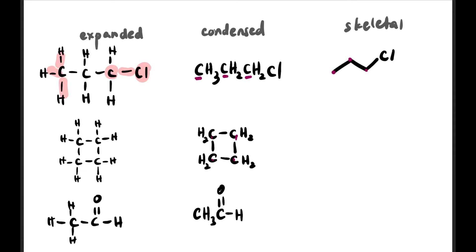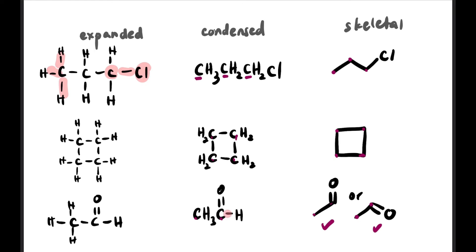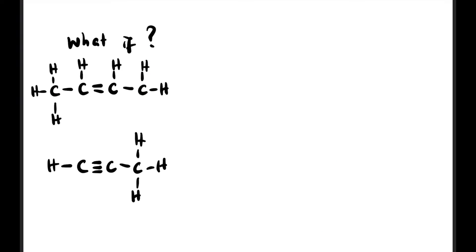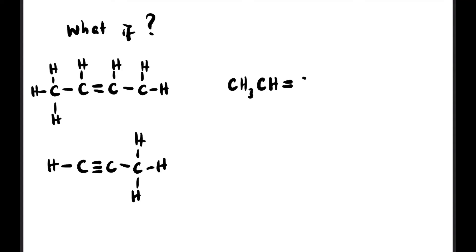For cyclobutene — a cyclic compound with 4 carbons — we draw a square to show 4 carbons, and hydrogen doesn't need to be shown. For CH3-C(=O)-OH, the double bond C=O must be shown since oxygen is not carbon or hydrogen. For a structure with C=C double bond: in condensed we write CH3-CH=CH-CH3, and in skeletal we count 4 carbons, draw the zigzag 1-2-3-4, and between carbon 2 and 3 we add a second line to show the double bond.